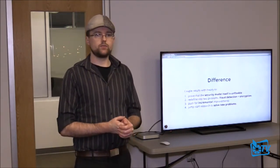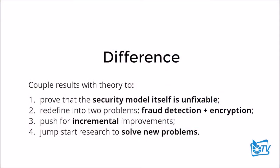If this largely replicates other findings, what's the difference? What I'd like to do is couple these results with fundamental psych theory to prove that the security model itself is unfixable. I would like to redefine the problem we're trying to solve, because I believe there are two orthogonal issues, and by trying to solve them both at the same time is what has stymied efforts in the past.